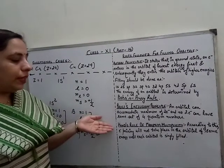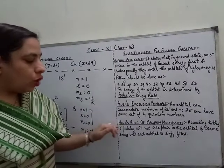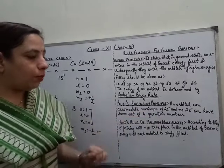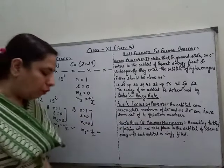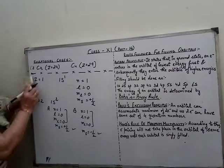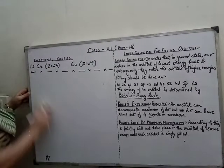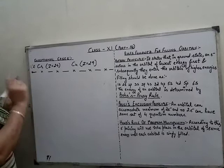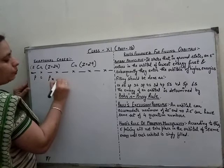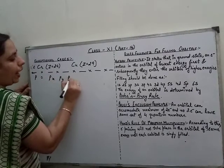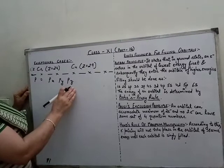Coming to the next rule: Hund's Rule of Maximum Multiplicity. It states that electron pairing will not take place in orbitals of the same energy until each orbital is singly filled. The s orbital is single and spherical. In the case of p, there are 3 orbitals: px, py, and pz — all of the same energy.